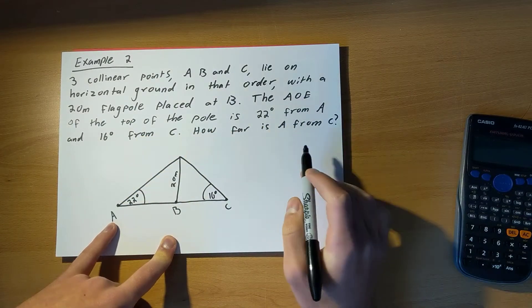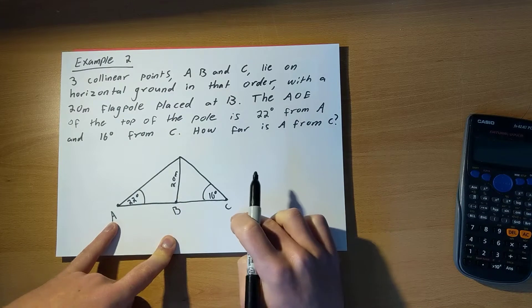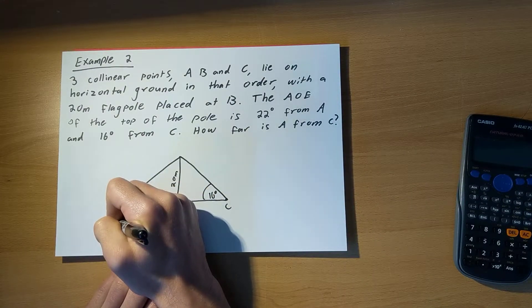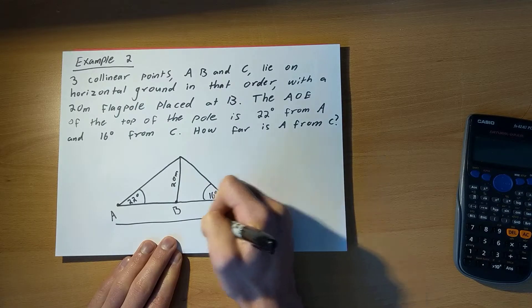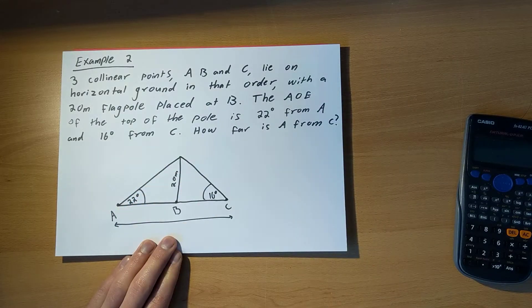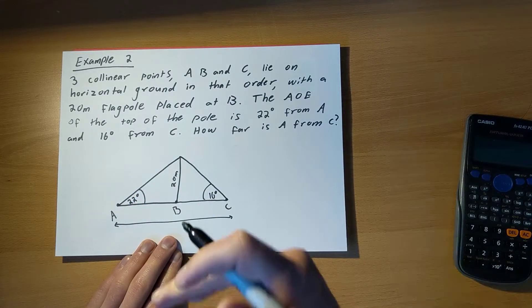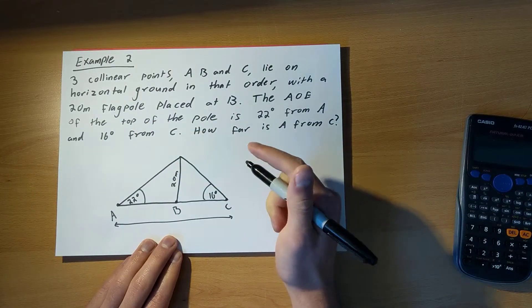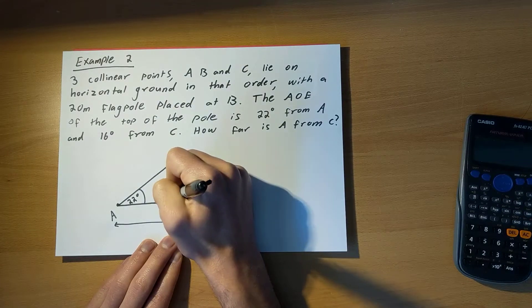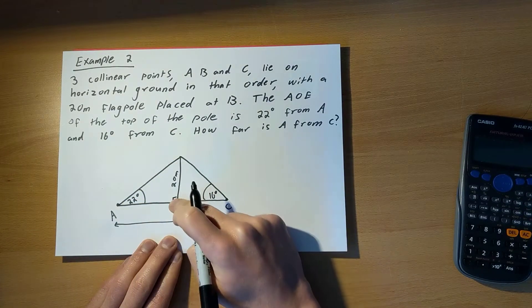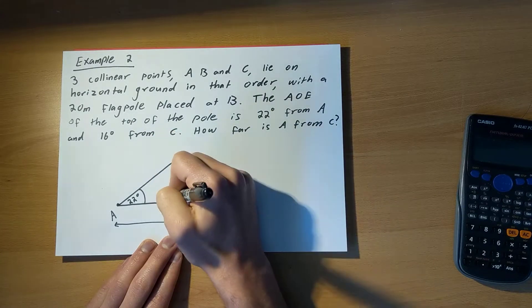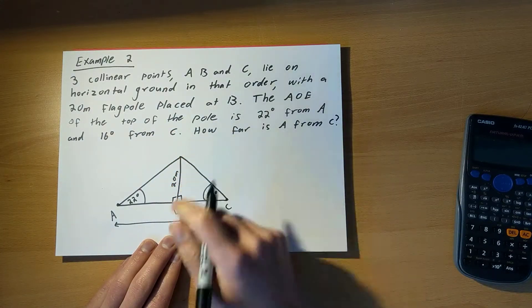And now the question is, how far is A from C? So I'm looking for this length here. In order to find that, again, same as last time, I'm going to look for the useful stuff in this picture that's going to help me work that out. So I notice immediately that because the angle of elevation is always from the horizontal, and this flagpole is vertical, I've got two right-angled triangles here.